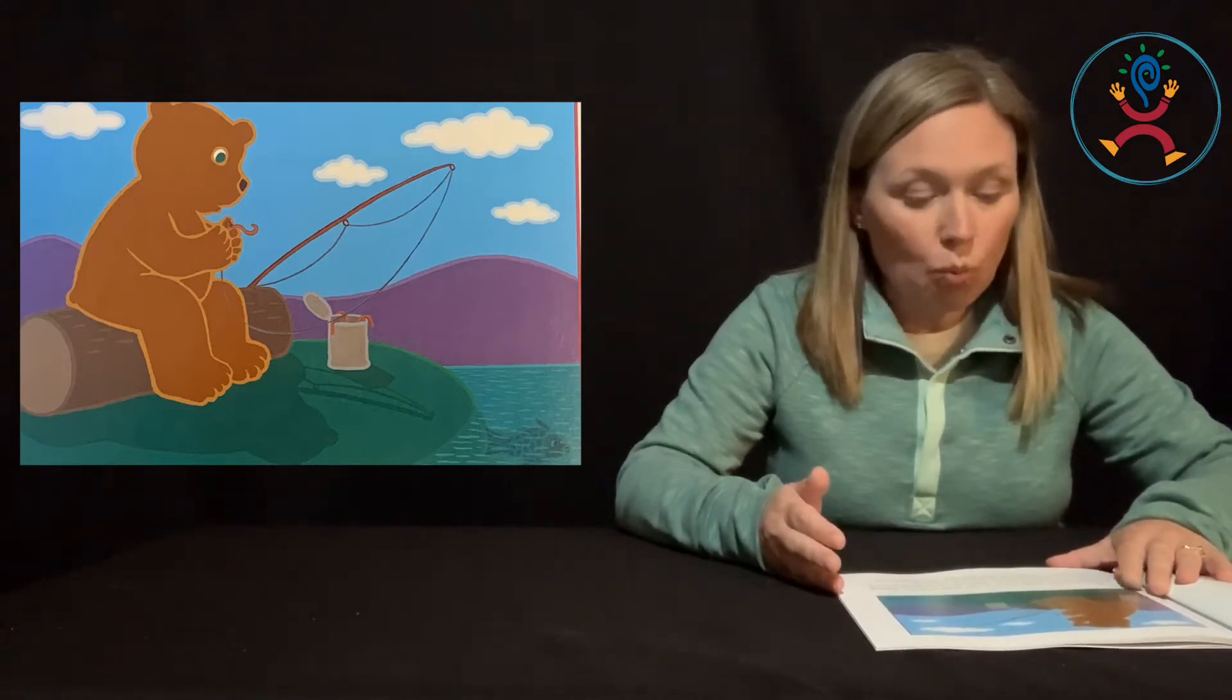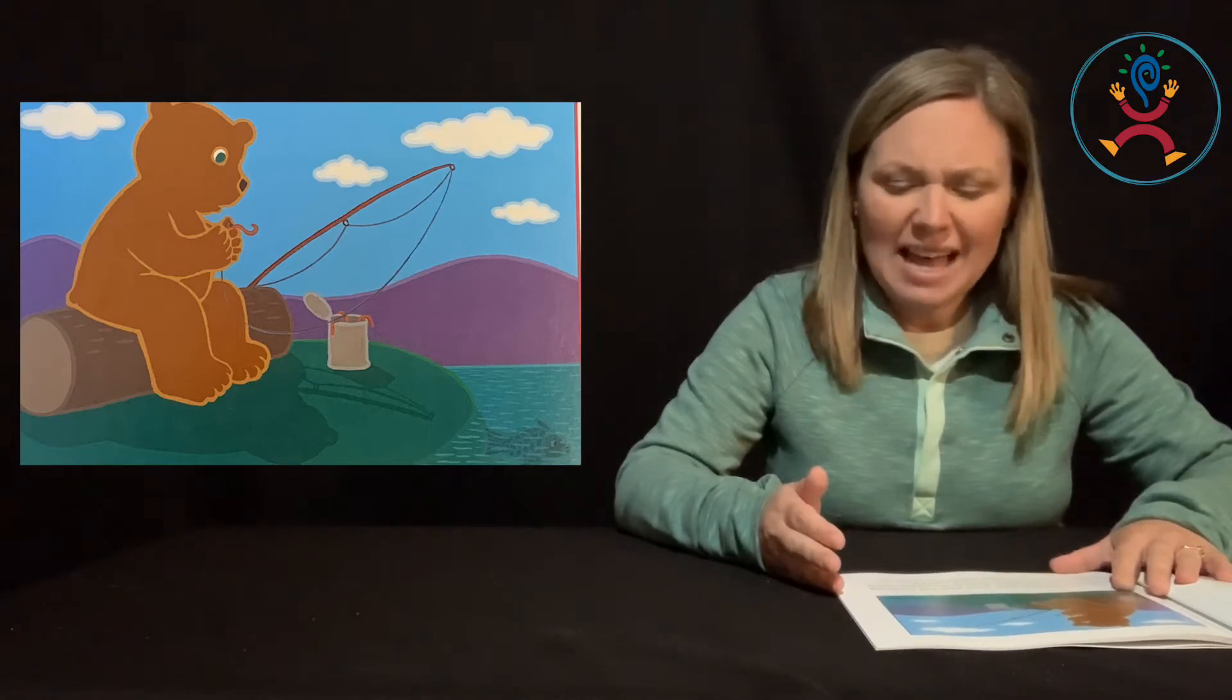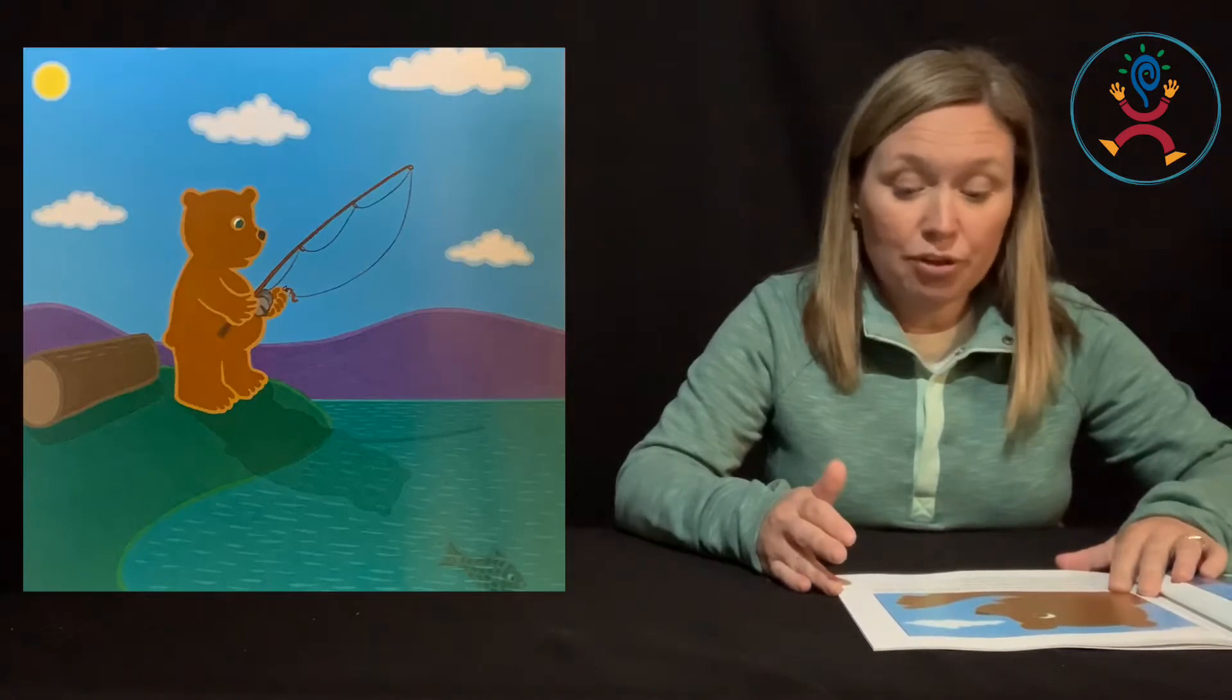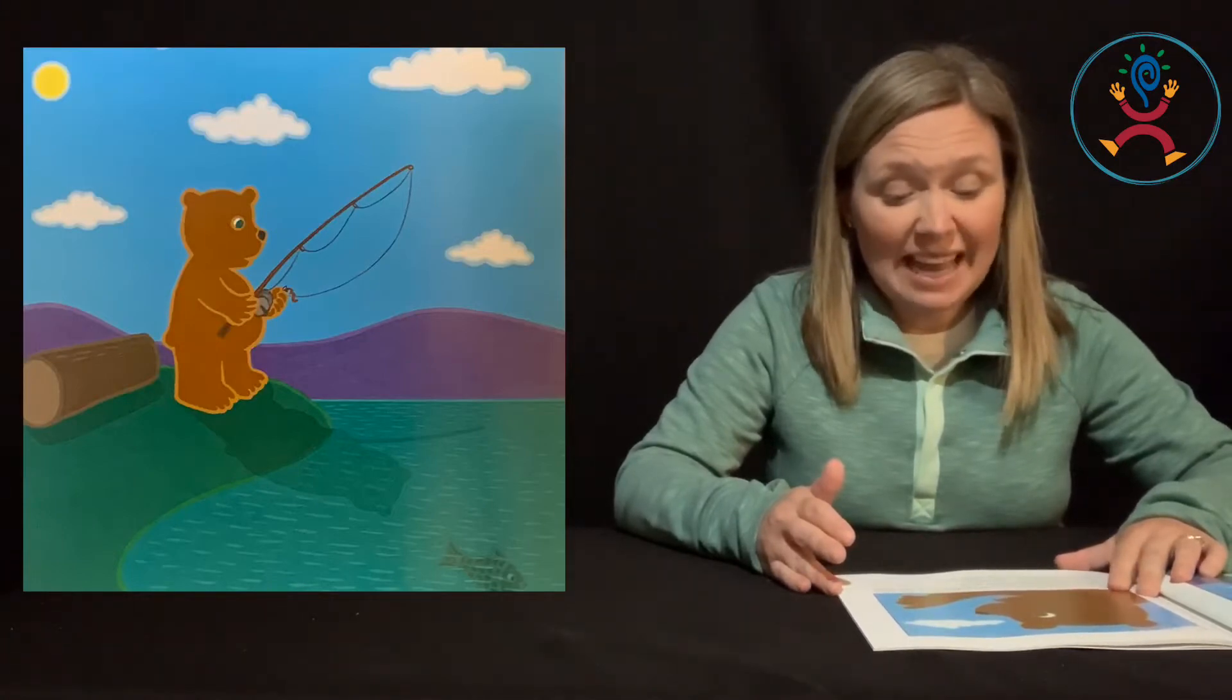One day Bear went down to the pond with his fishing pole and a big can of worms. While he was putting a worm on his hook, he looked down and saw a big fish. I'm going to catch that fish, thought Bear to himself. But when Bear stood up to throw his line in the water, his shadow scared the big fish away.